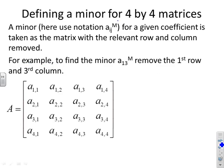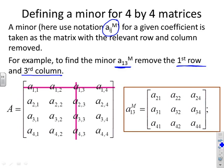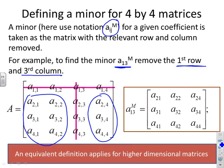Defining a minor for a 4x4 matrix. And we're going to use the same notation as in the previous video. This a_ij for the position and the superscript m to say this is a minor. So if I want to find the minor for the 1-3 position, I remove the corresponding row and the corresponding column. So there you see I've removed the third column and the first row. And the minor is simply the matrix that is left. So here, the minor for the 1-3 position comprises these 6 elements and these 3 elements stacked to give a matrix. So a minor for a particular coefficient, you just strike out the row and column for that coefficient and take whatever's left. And that definition is clearly applicable to whatever dimension matrix you choose.